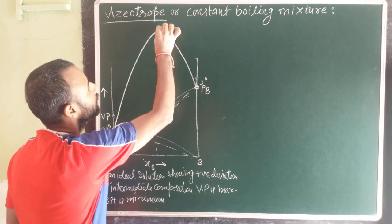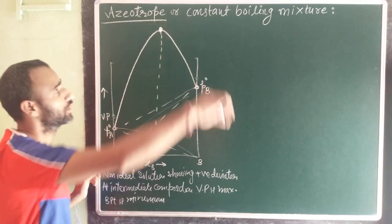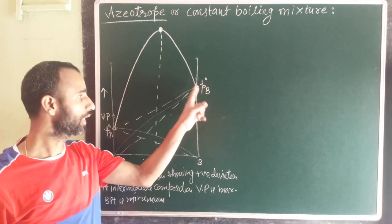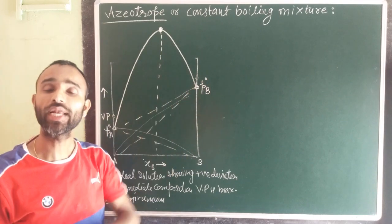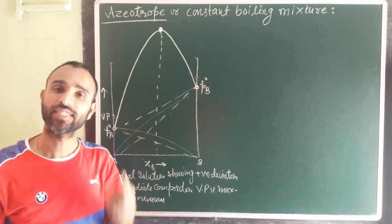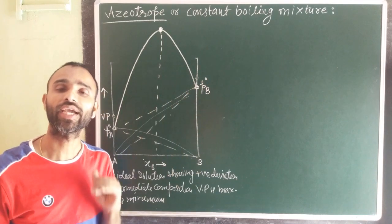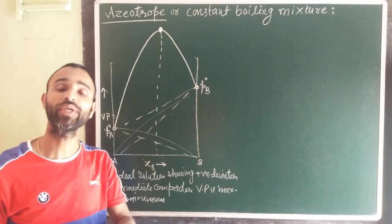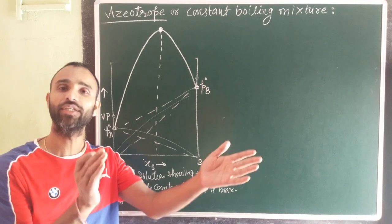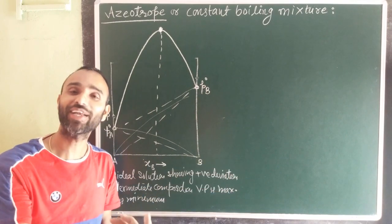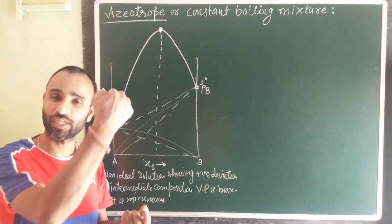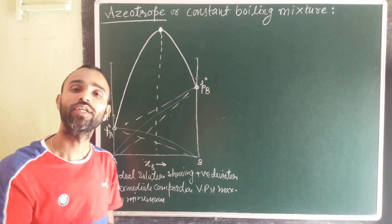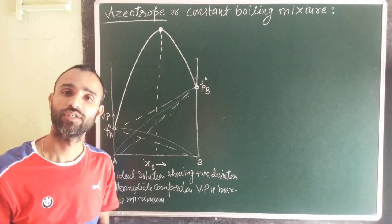This is the composition at which both liquids A as well as B boil at the same temperature, and they cannot be distilled — they cannot be separated.